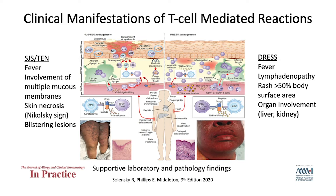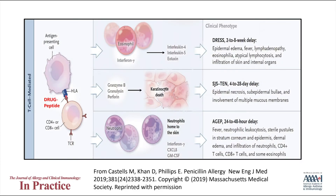As shown on this slide, the symptoms and signs differ according to the clinical phenotype. For instance, Stevens-Johnson syndrome/toxic epidermal necrolysis (SJS/TEN) is associated with fever, involvement of more than one mucous membrane, and skin necrosis. Drug reaction with eosinophilia and systemic symptoms (DRESS) is a multi-system disease typically characterized by fever, lymphadenopathy, extensive rash, and organ involvement.